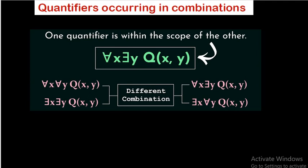Hello, welcome back. This video is the continuation of the previous lesson. Under this topic we will see quantifiers occurring in combinations. In our previous lesson we discussed the two types of quantifiers: universal and existential. The symbol for universal is an upside-down A, and existential is when the E is inverted. In propositions containing two variables, the two quantifiers may occur in combination.